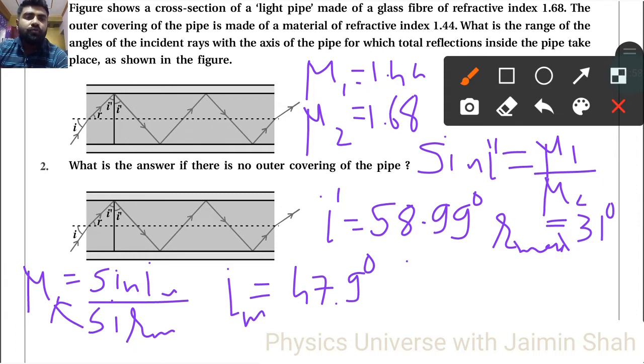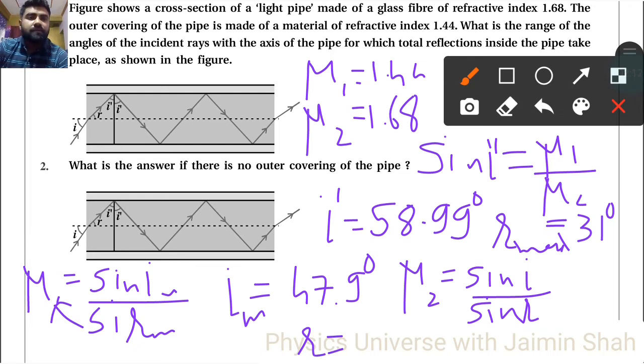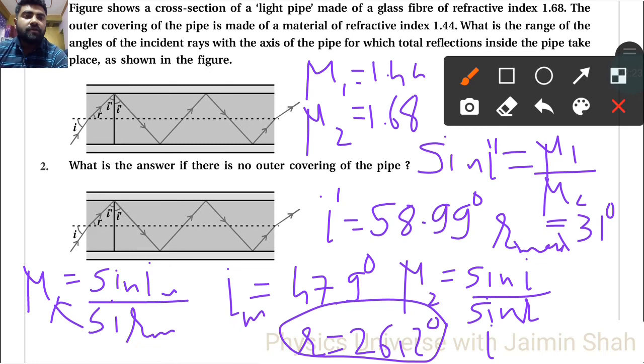Now μ₂ formula is sin i upon sine r. So r is what we have to find. So r is 26.2 degrees, that is our r. So now i is equal to 90 minus that value 26.2.